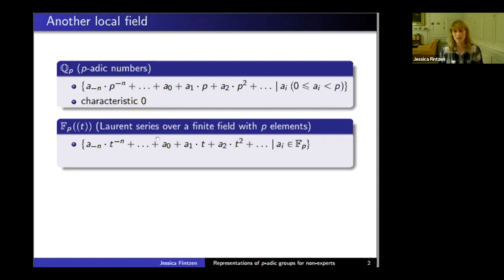You take Laurent series or power series where you allow finitely many negative exponents, but now ask the coefficients to be in the finite field with p elements—basically numbers between zero and p minus one with a dummy variable T instead of powers of p.